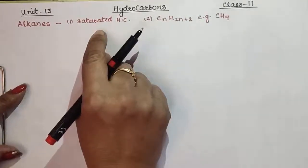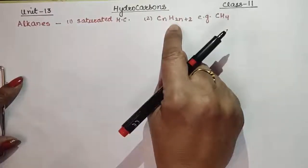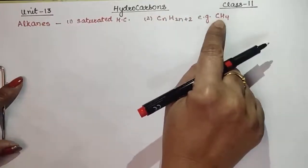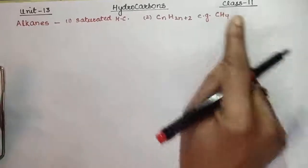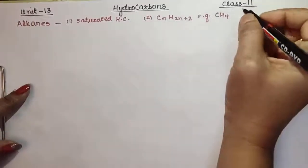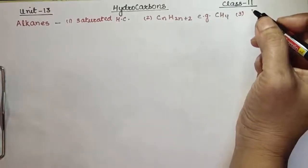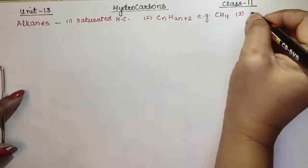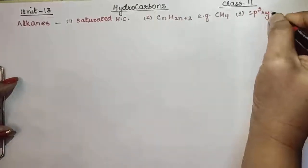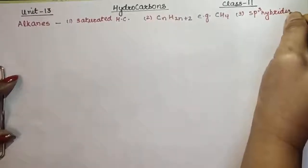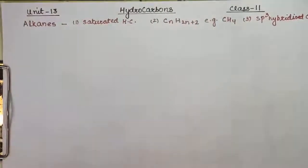The first point is that alkanes are saturated hydrocarbons. The second is the general formula. Now if we talk about hybridization, in the methane molecule, carbon's hybridization will be sp3. So sp3 is the hybridized state of carbon in alkanes. Wherever you see alkanes and talk about hybridization, alkanes' hybridization is sp3.